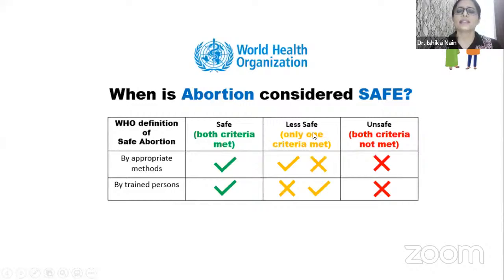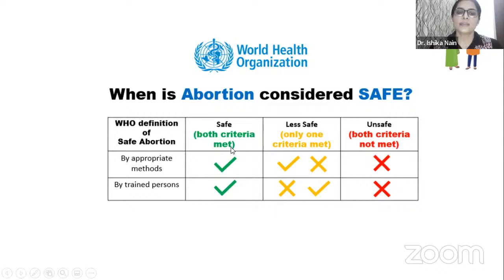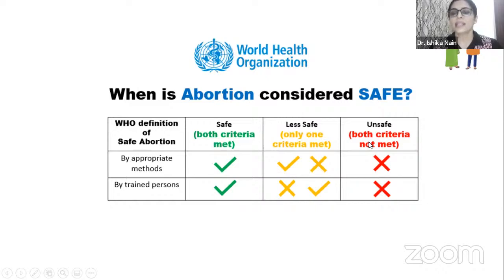This is the most vulnerable group — teenage and young women, the unmarried ones, and those who do not have access to safe abortions. According to WHO, the definition of safe abortion consists of two criteria: abortion should be given by appropriate methods and by a trained person. If both criteria are met, it is a safe abortion. If only one is met, it is less safe. If both are not met — method not appropriate and person not trained — it is unsafe.